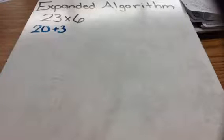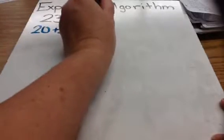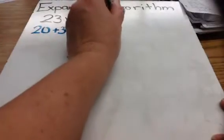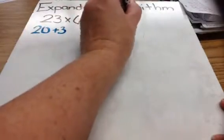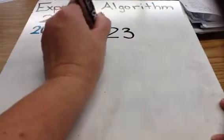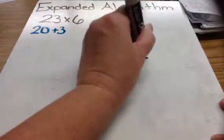Step one in the expanded algorithm is to simply write the multiplication problem vertically. And I tell my students who don't know what vertically means — that means write it up and down. So, I'm going to write 23 times 6 vertically.